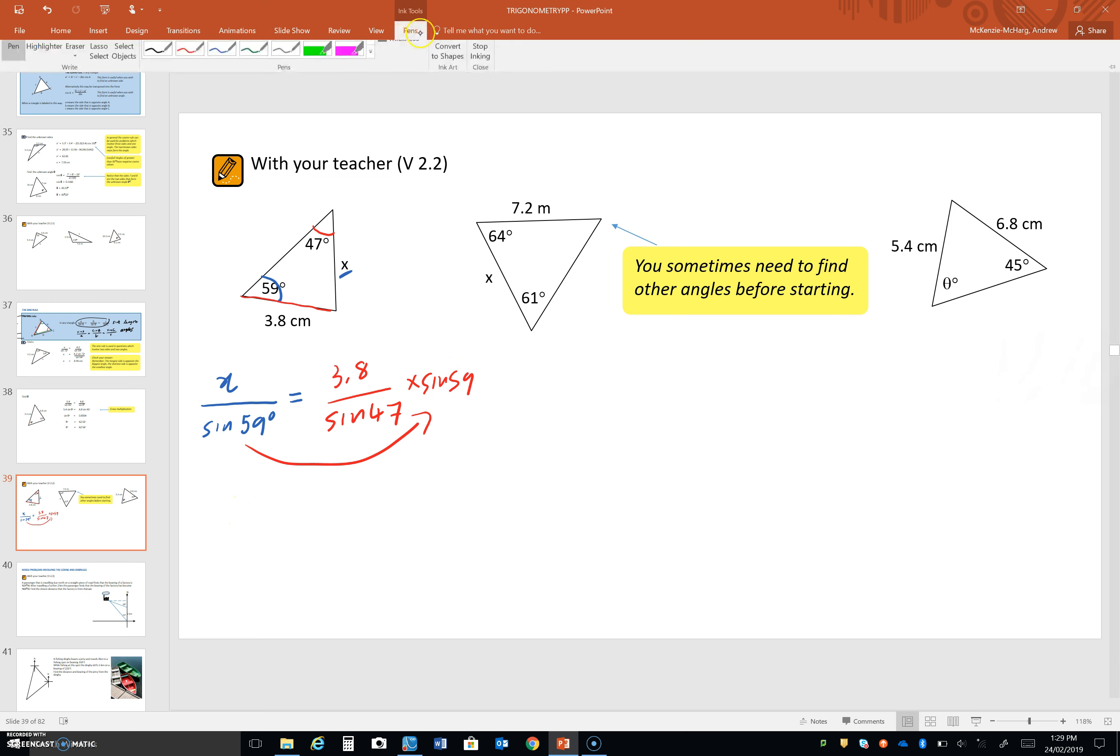So, essentially, we have that x equals sine 59 times 3.8 over sine 47. So, you might want to try and put that into the calculator and get the same result as me, which is 4.5 centimeters.